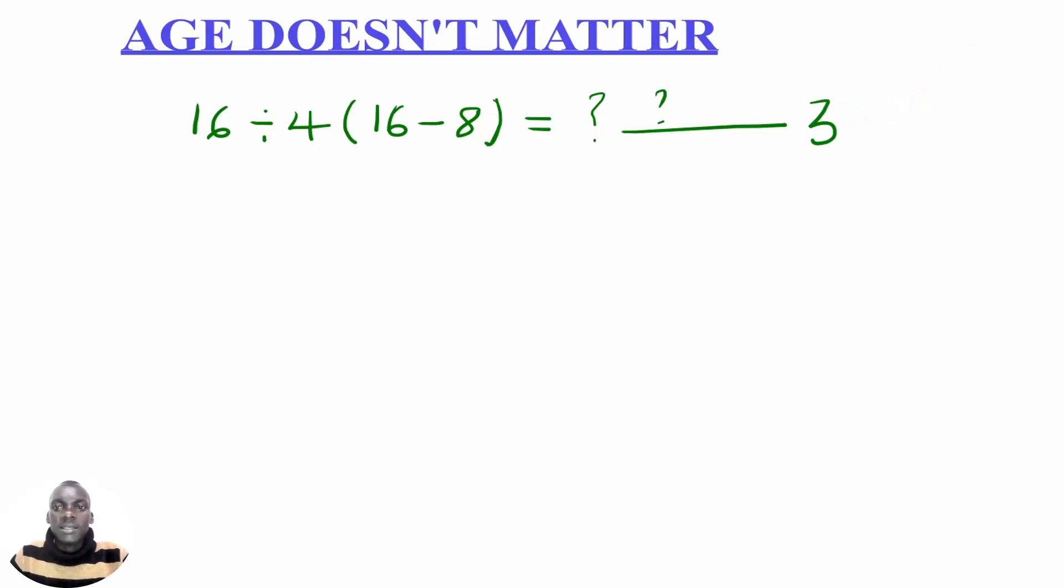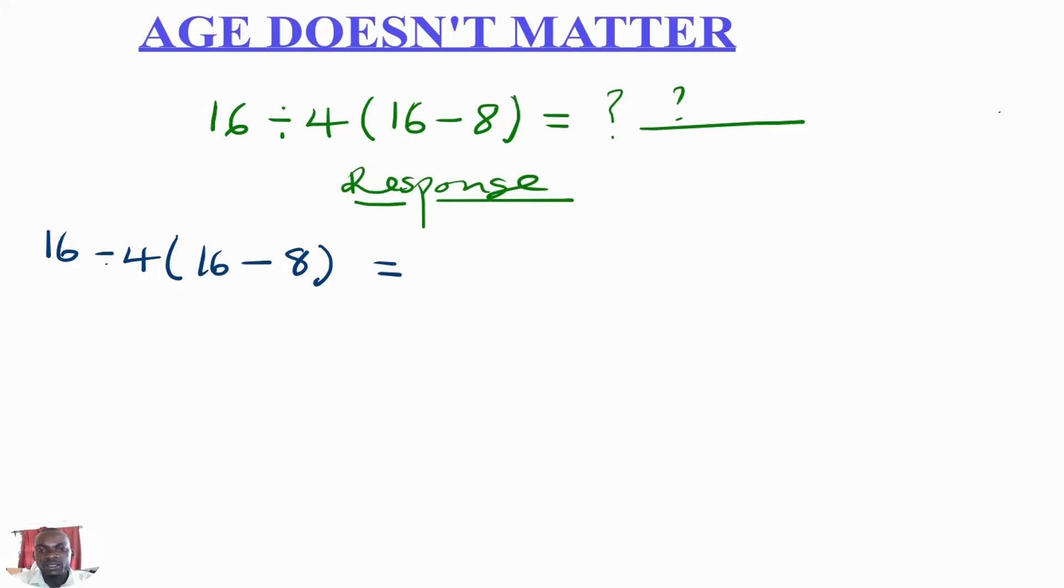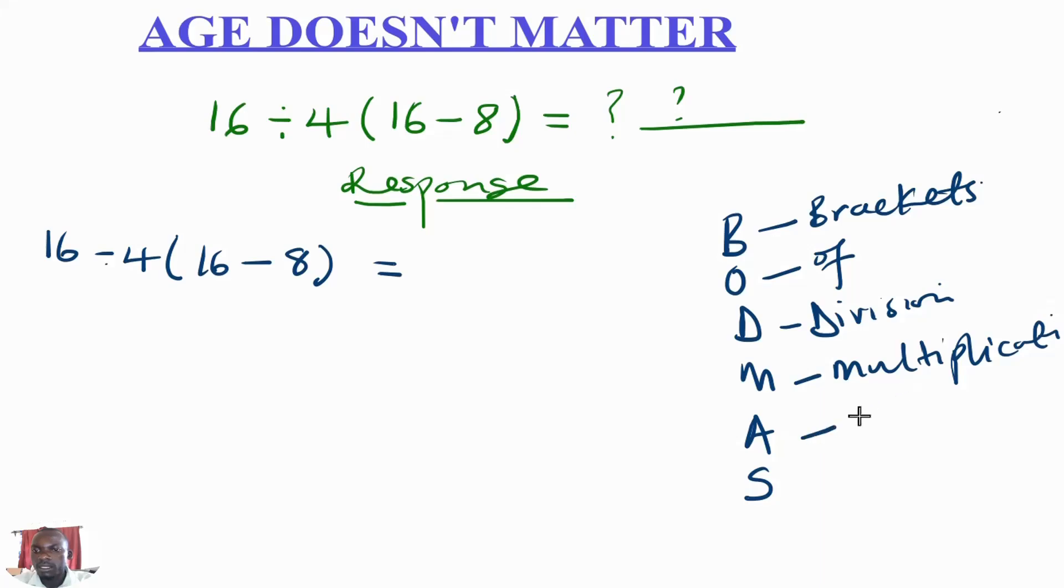Let us see. The correct approach would be we are going to follow BODMAS. B stands for brackets, O stands for of, D stands for division, M stands for multiplication, A stands for addition, S stands for subtraction. In that order.